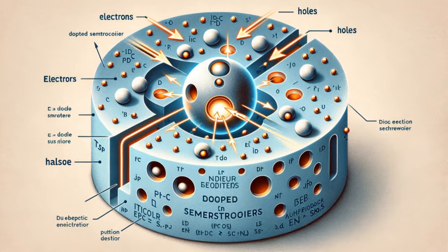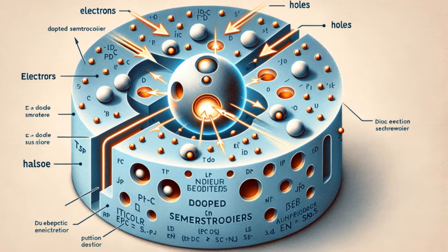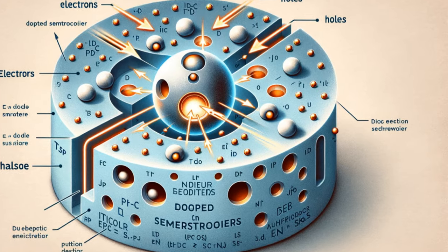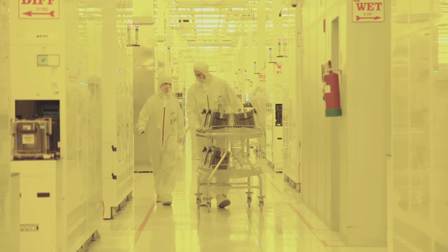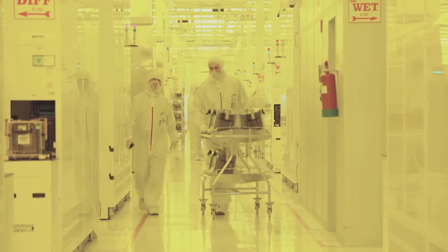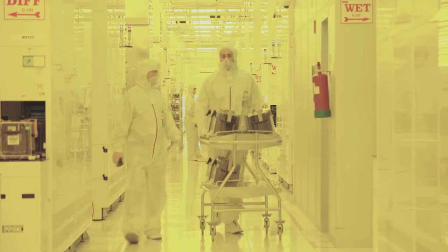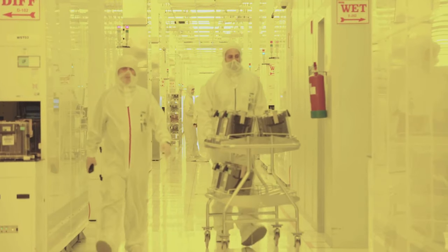Furthermore, the interaction between electrons and holes in doped semiconductors gives rise to unique electrical phenomena that are exploited in various electronic devices, such as diodes and transistors.